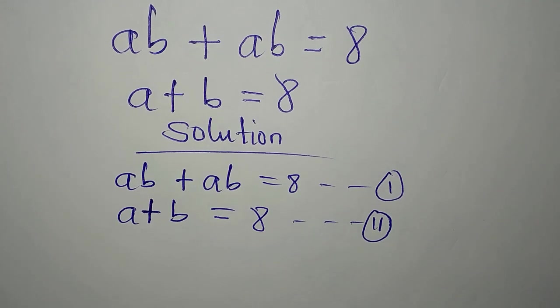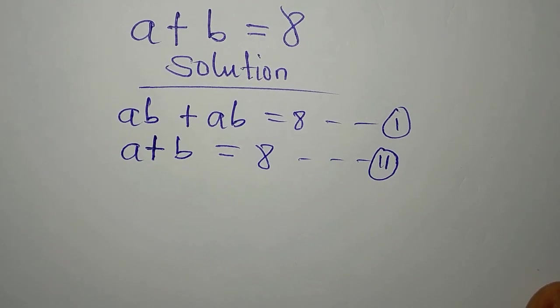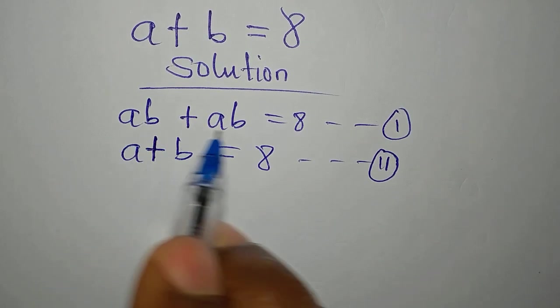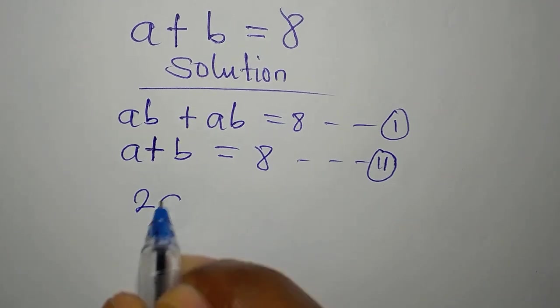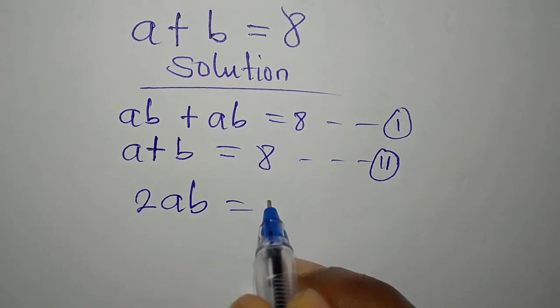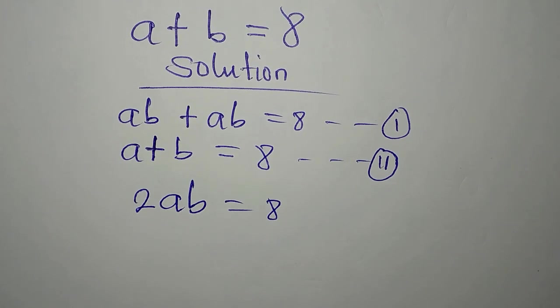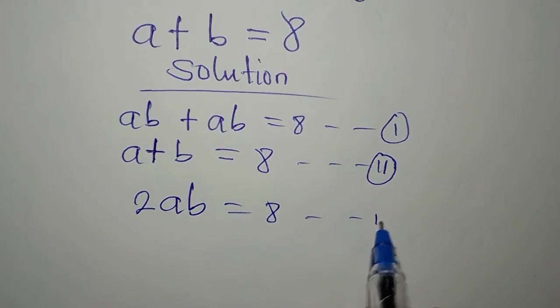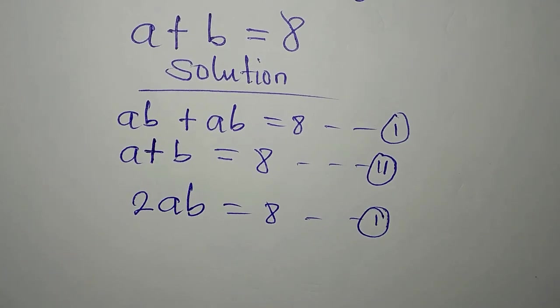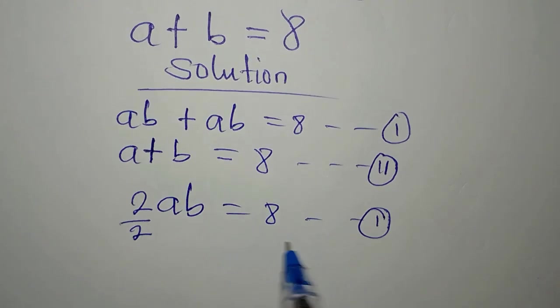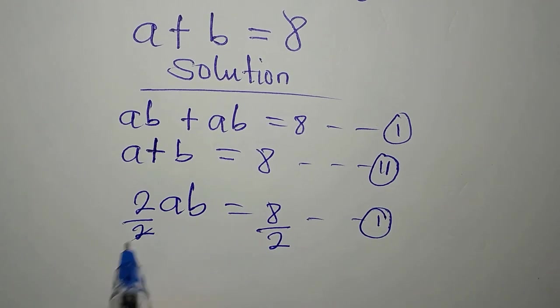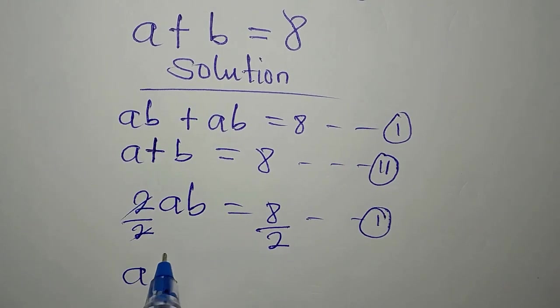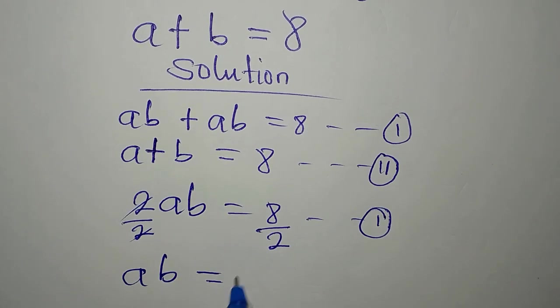If you look at equation 1, you can take a step from there. Why? Because AB plus AB will give us 2AB equals 8. This is still our equation 1. We have not changed anything. And I can still divide this by 2 and divide this by 2.